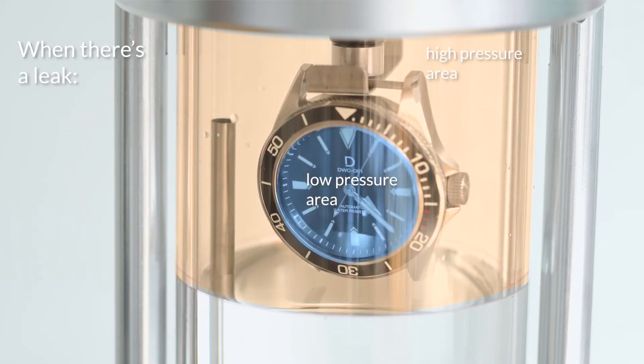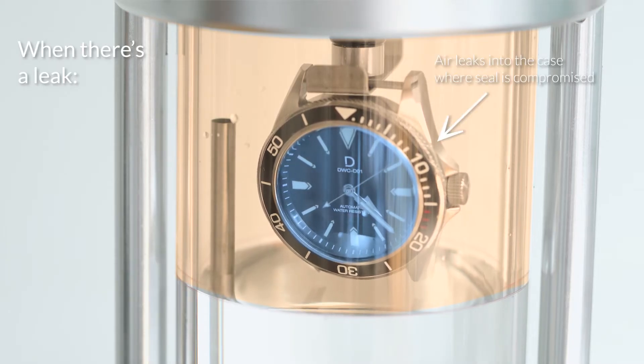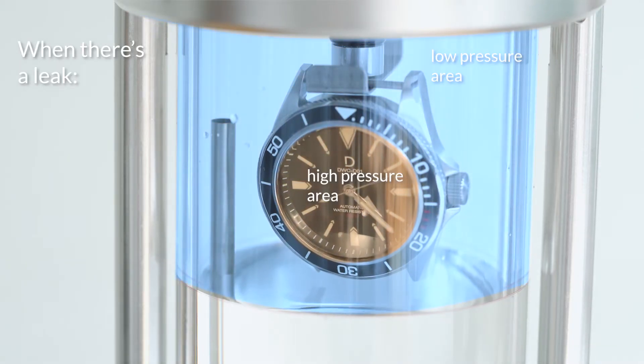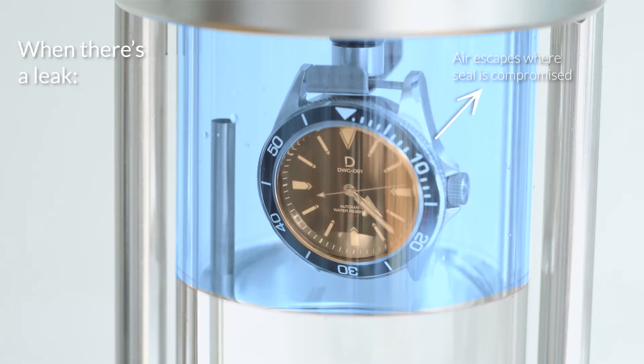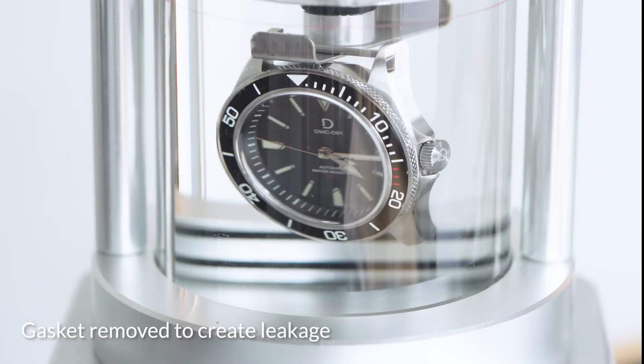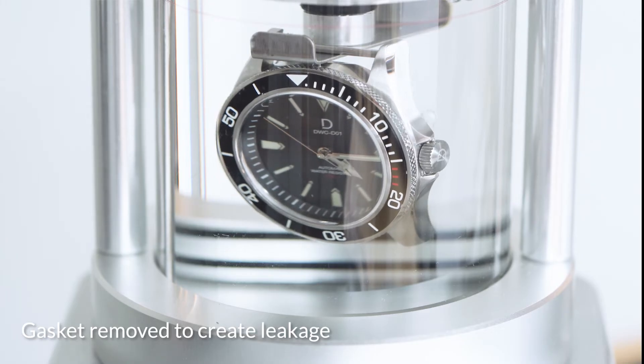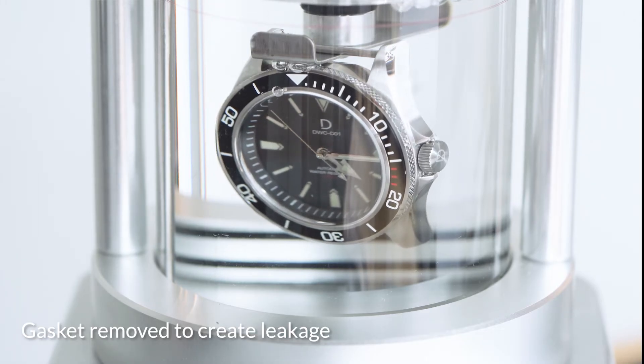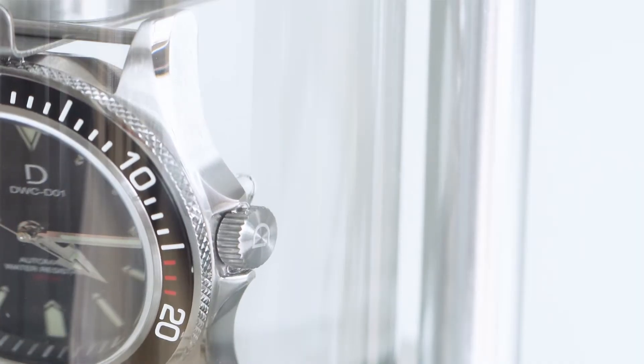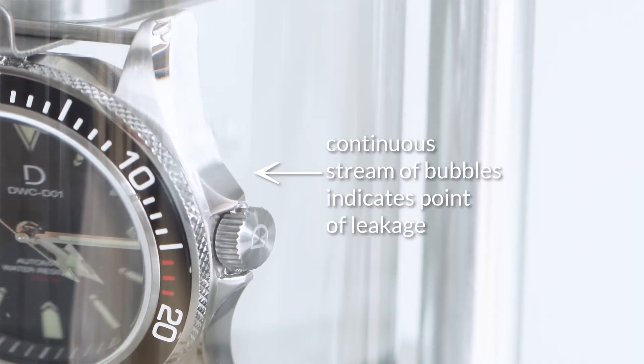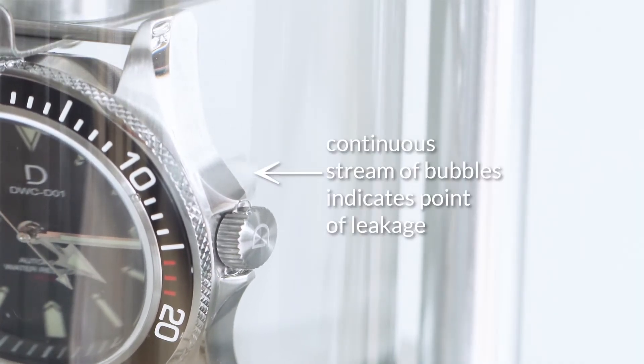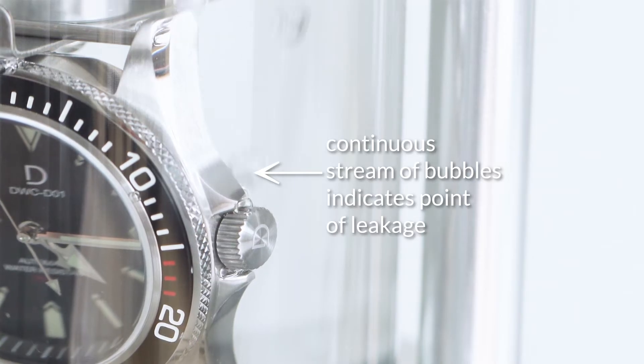When the chamber is pressurized, if there is any leak in the watch case, air will get into the case. And when the chamber is depressurized, the same air will escape the case. And in the water, you'll see it escaping as a stream of bubbles. Since the bubbles are extra air escaping instead of water getting in, this design has the advantage of minimizing the amount of water getting into the case if used properly.